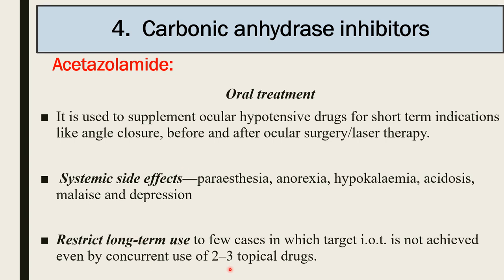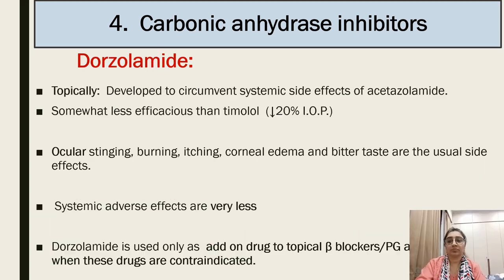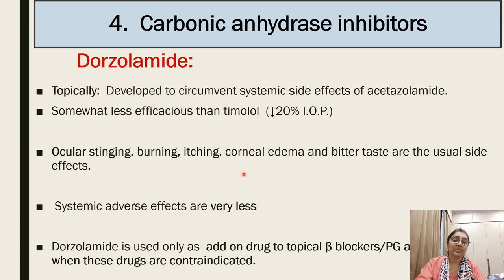Acetazolamide is used strictly long-term only in cases where target intraocular tension is not achieved even with concurrent use of 2 to 3 topical drugs. Dorzolamide was developed topically to circumvent systemic side effects of acetazolamide but is somewhat less efficacious than timolol, reducing IOP by less than 20%. Local side effects include ocular stinging, burning, itching, and corneal edema. Dorzolamide is used as add-on therapy to topical beta blockers or prostaglandin analogs when those drugs are contraindicated.